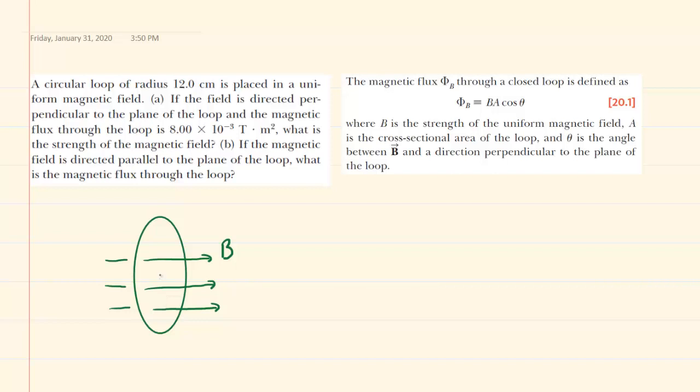And we are asked to determine the strength of the magnetic field based on a given magnetic flux as well as a radius. So we need a relationship between the radius, the magnetic flux which is symbolized by this Greek letter, and then the magnetic field which is symbolized by B. Such a relationship exists.